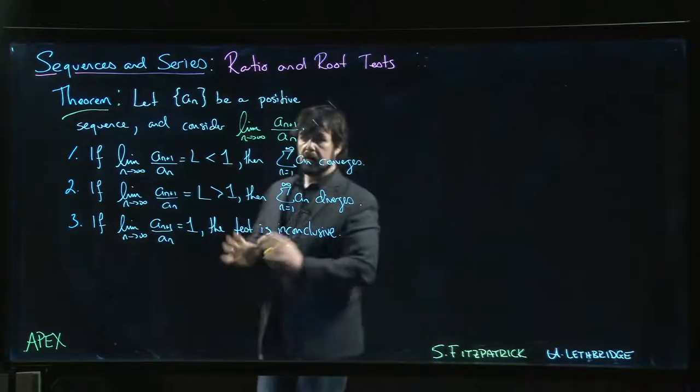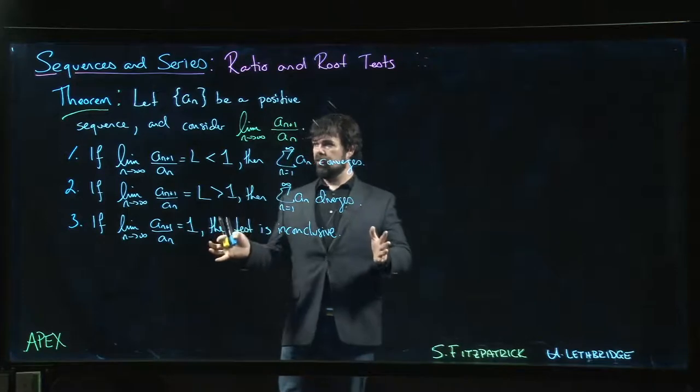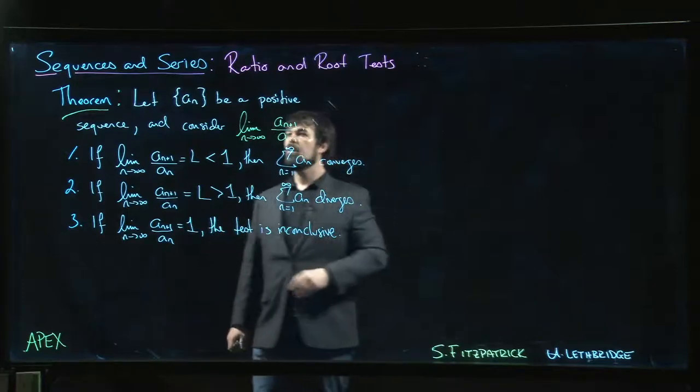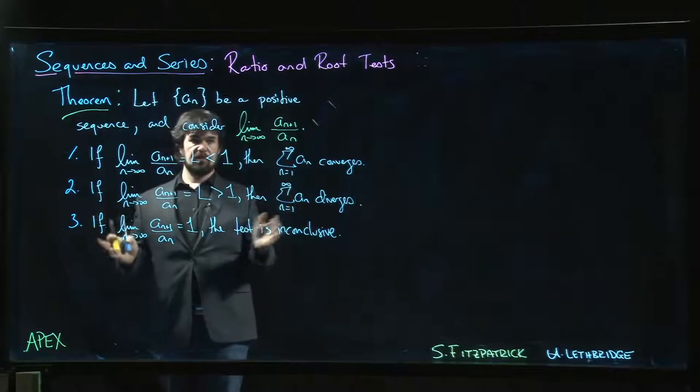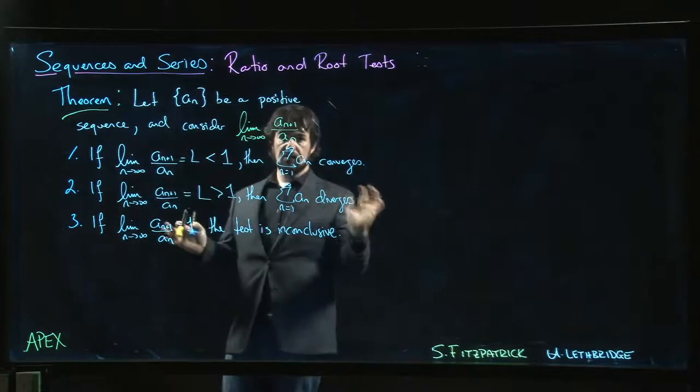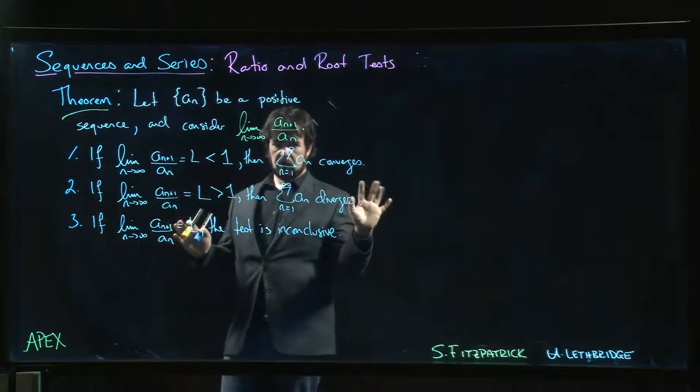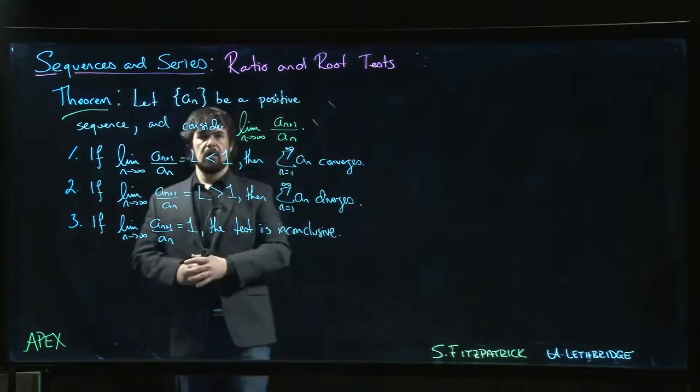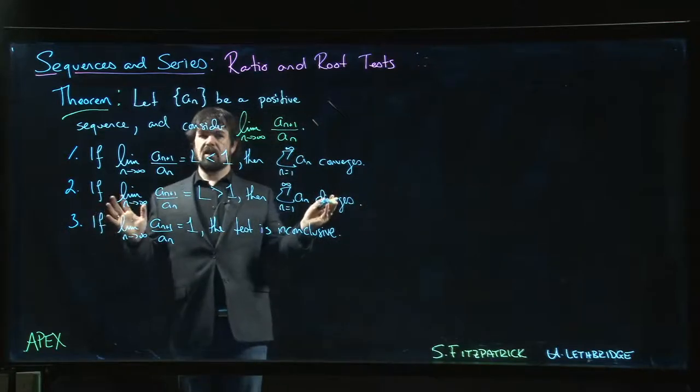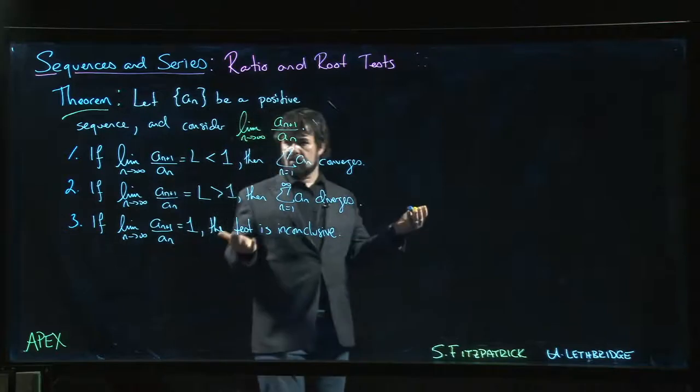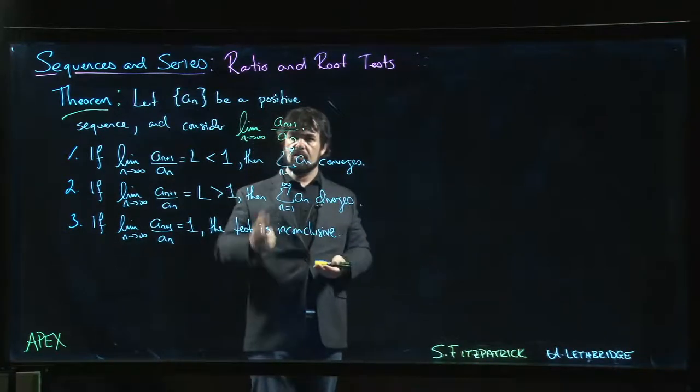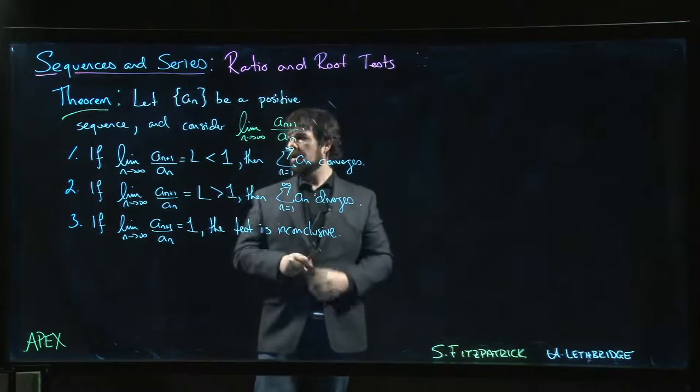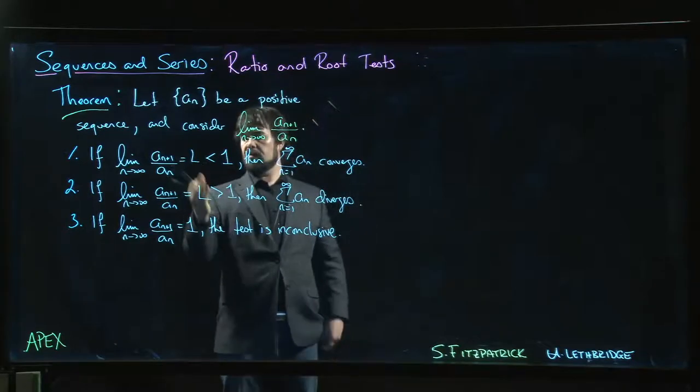Alright, so our next topic is the ratio test, stated here as a theorem. Again, the assumption is that we're dealing with a positive sequence, so our series is summing positive terms without alternating signs. The ratio test gives you a simple thing to consider: just look at the ratio of consecutive terms in your sequence, a_n+1 over a_n.